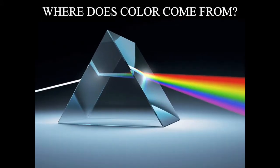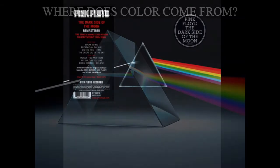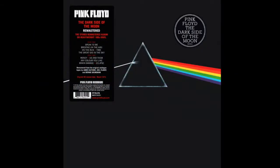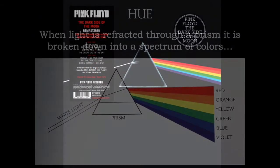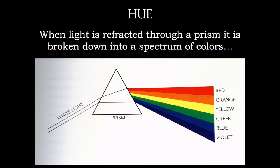But where does color come from? The answer is, color comes from light — which is a pretty odd statement, considering light for most of us appears colorless. But in 1666, Sir Isaac Newton refracted light through a prism and found it's made up of an array of colors. Even Pink Floyd knew about this. Those six colors are referred to as hues.